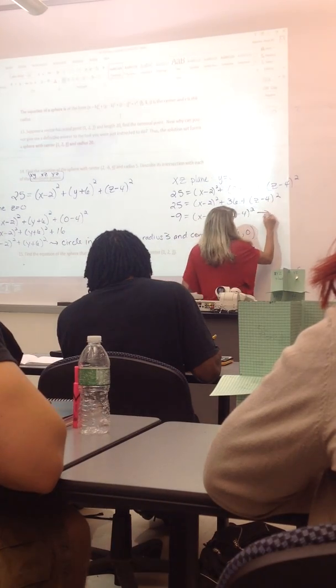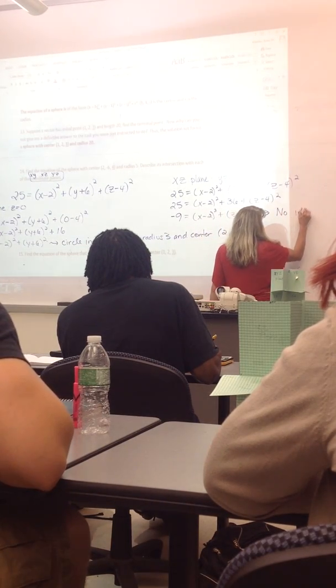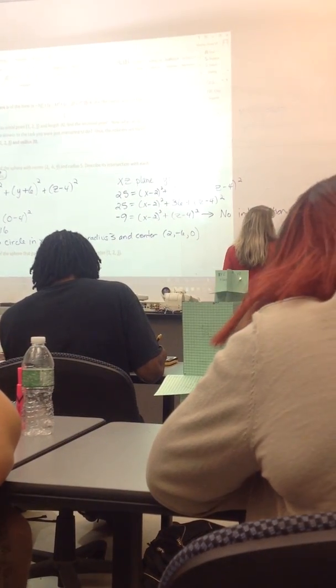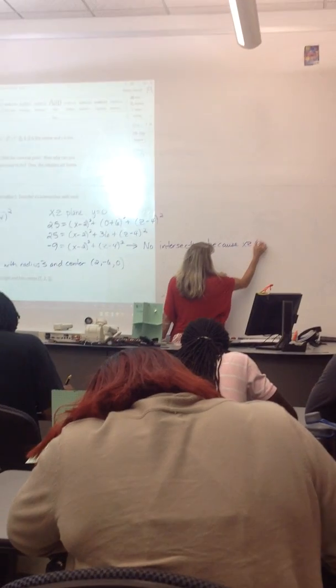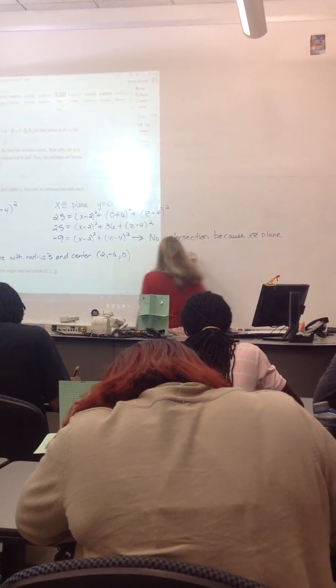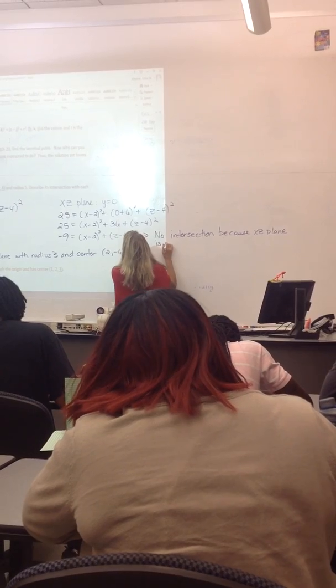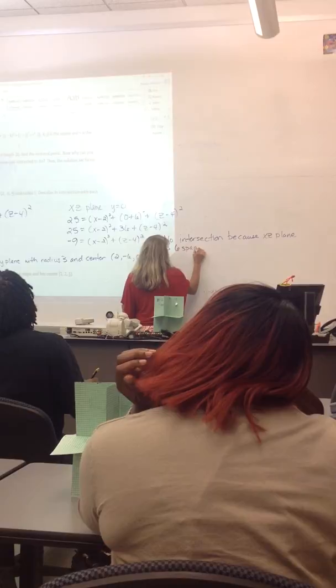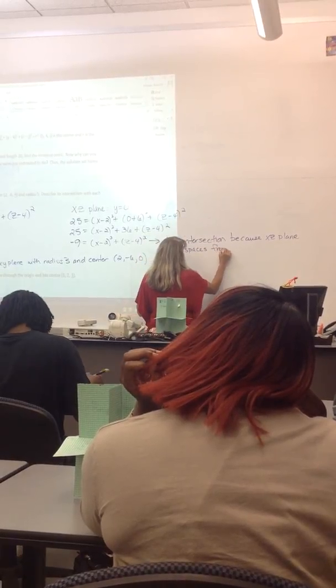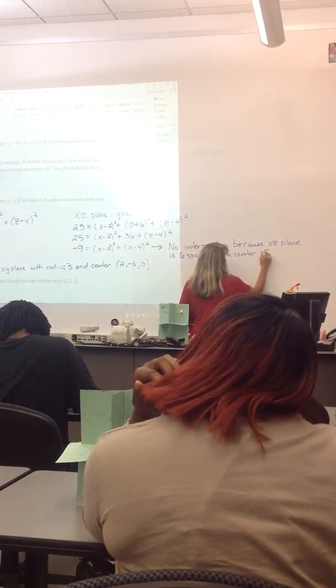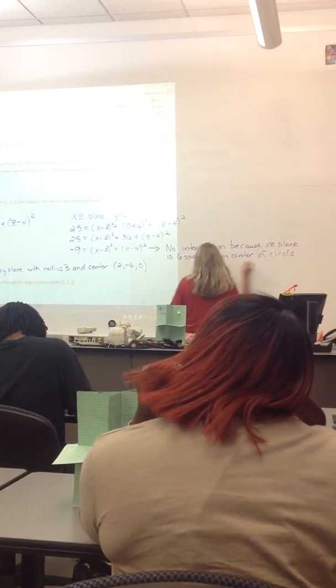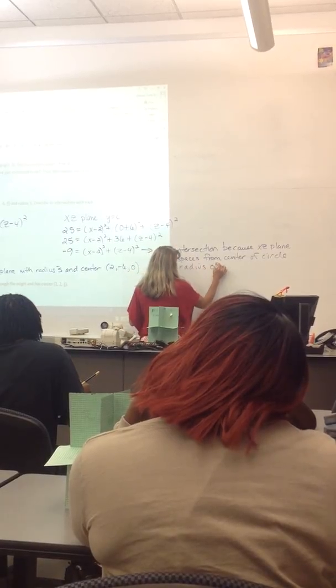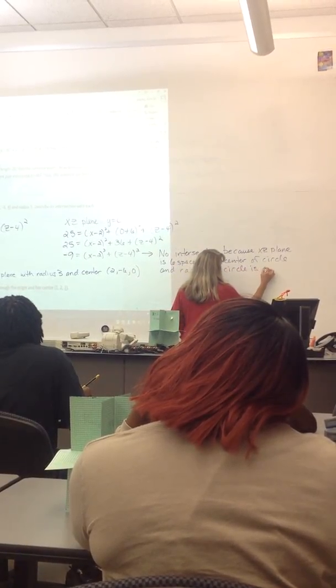So this tells me that there is no intersection because the xz plane is 6 spaces from the center of the circle, and the radius of the circle is only 5.